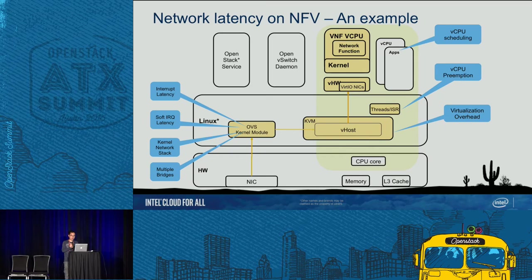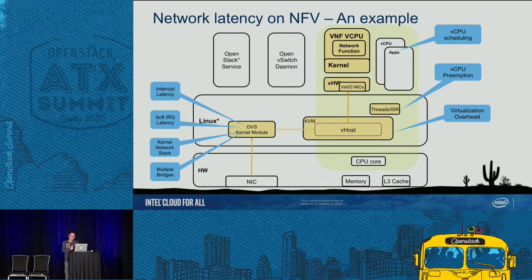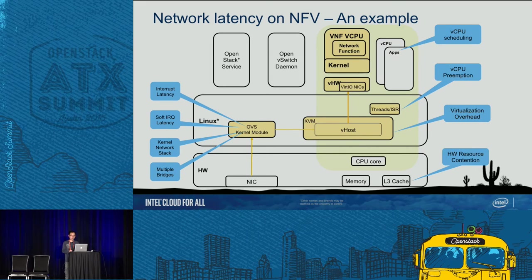There is still another issue: virtualization overhead when the vCPU is running the network function. It may cause a VM exit transition to the KVM hypervisor to complete virtualization for some device emulation. The most fast KVM transition takes at least 10 microseconds in virtual hardware. Finally, there is hardware resource contention: in current CPU architecture, some CPU cache — like L3 cache — is shared by multiple CPU cores. So even if the vCPU is running on its CPU core, it has to contend with other applications on other CPU cores for L3 cache, memory bandwidth, TLB, and everything.